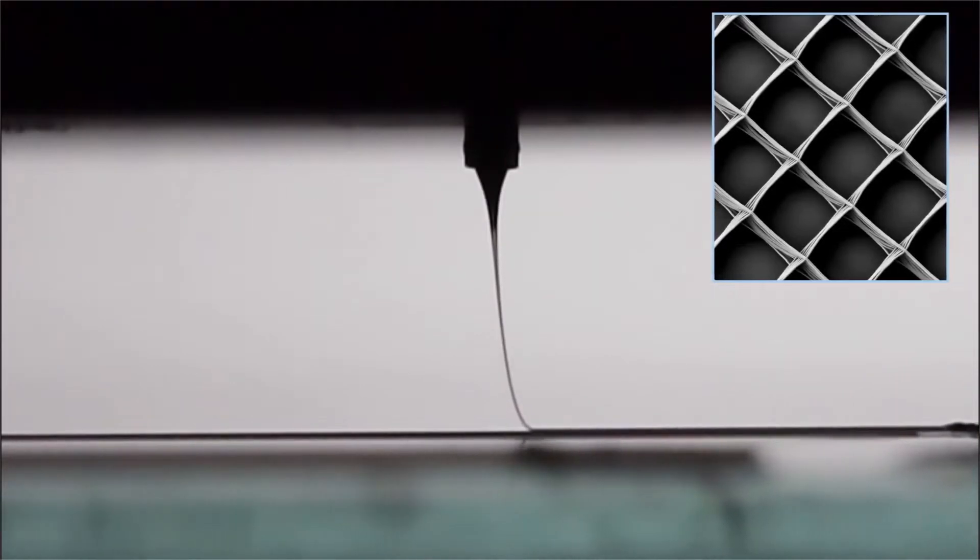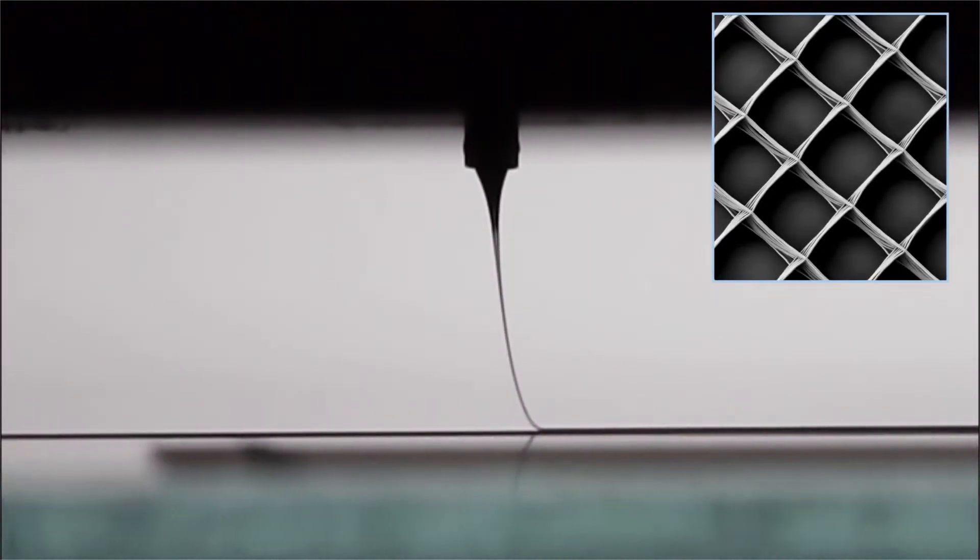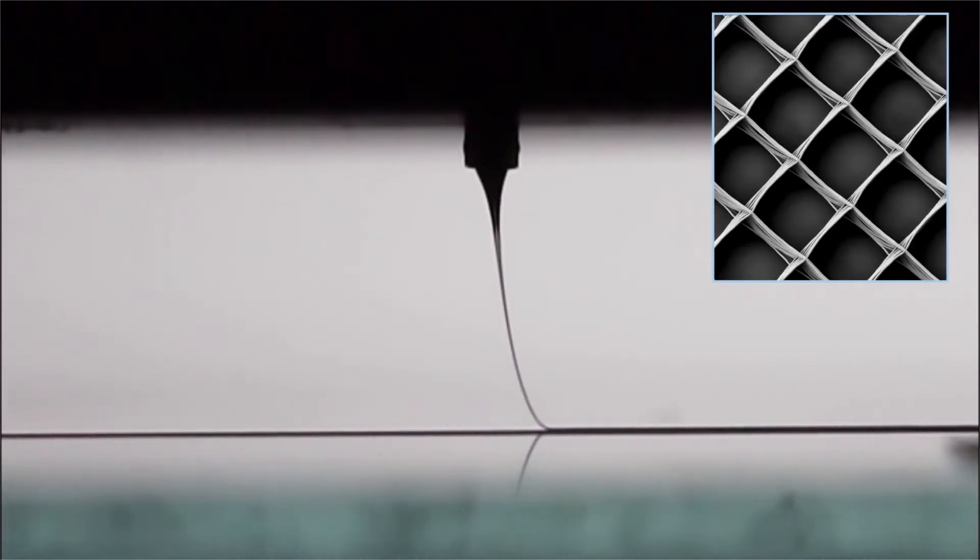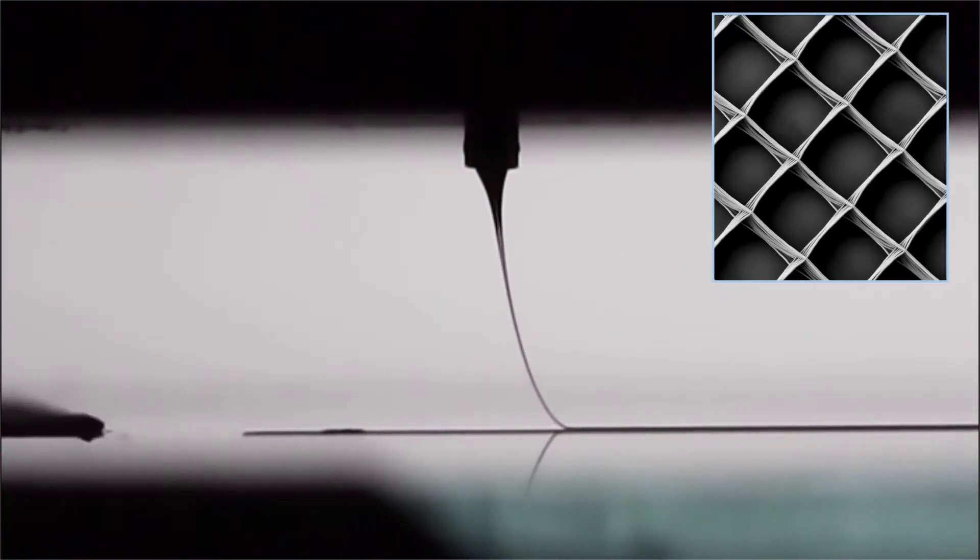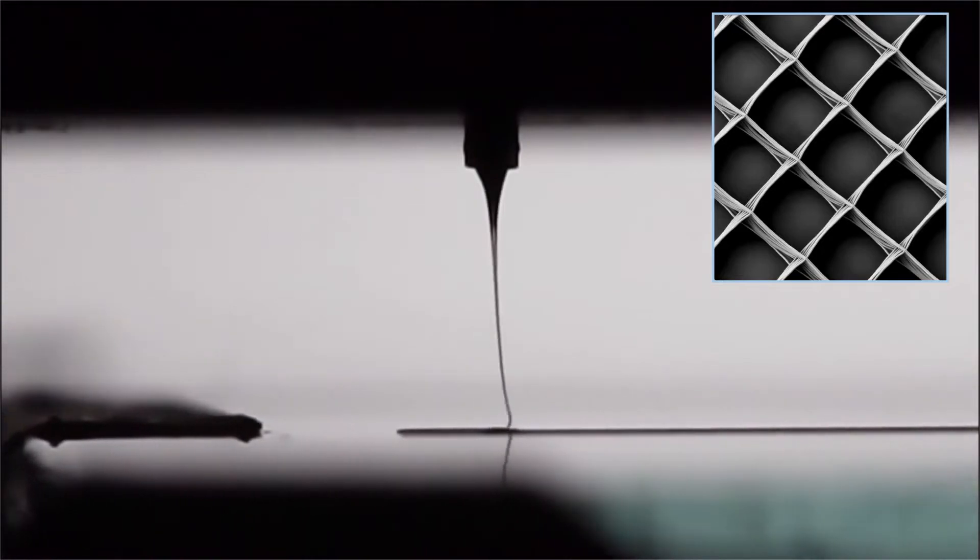Material deposition along a predetermined printing path was previously used to print structures by vertically stacking layers. However, that limited the range of possible printed geometries.